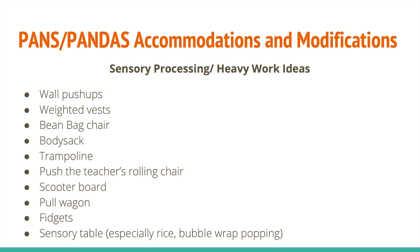Sensory processing and heavy work ideas. Heavy work is a strategy used in therapy to target the sense of proprioception, which is responsible for helping our body understand where it is in space. For children with sensory processing difficulties, using proprioception through heavy work activities can be especially powerful in helping them self-regulate, pay attention, and remain calm. Heavy work is an activity that pushes or pulls on the body, more specifically our joints. All of these things I've listed can be in a regular classroom, and not only does it benefit our PANS and PANDAS students, but also benefits all other students. We just want to find one or two that work for our students.